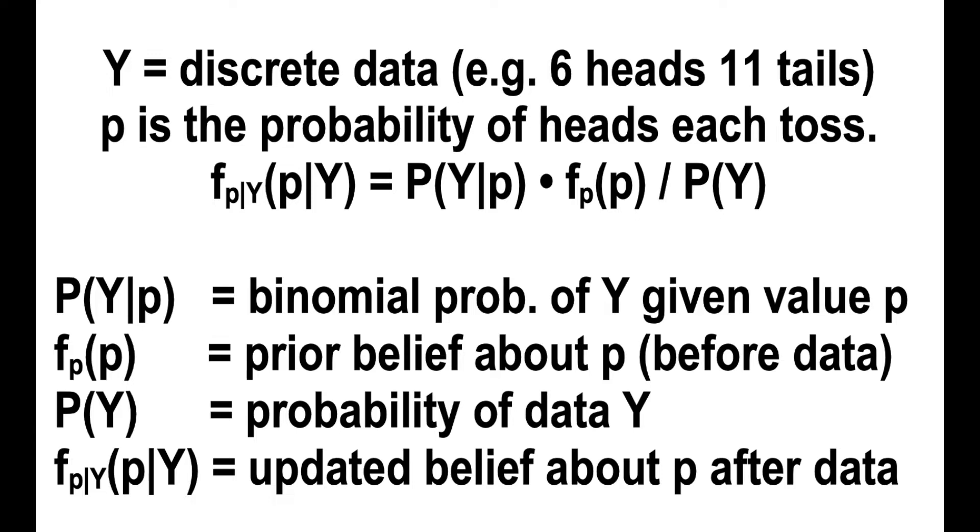The Bayes' rule has four parts. Probability of Y given p is the probability problem, the binomial distribution.